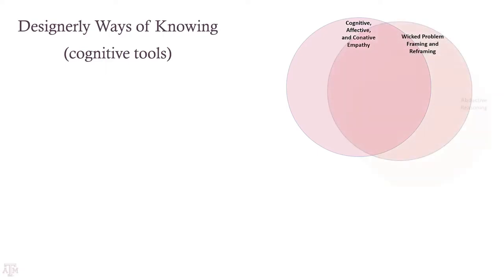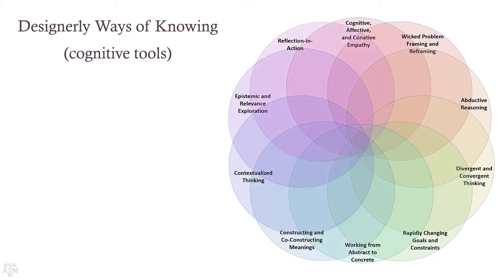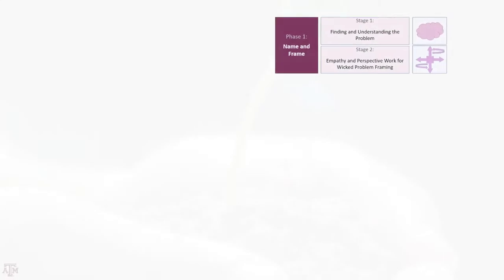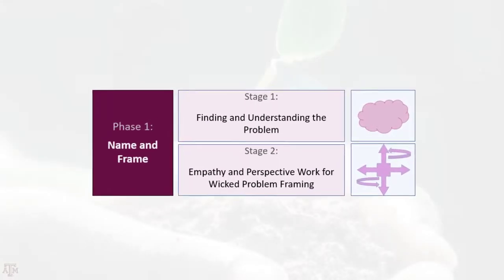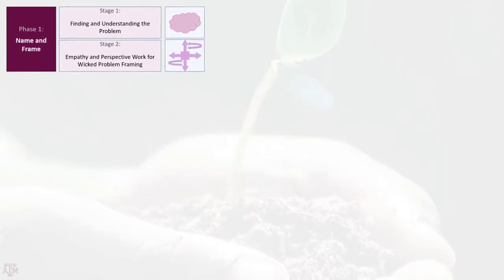These five phases are broken down into 10 steps. The designerly ways of knowing emphasized in the DTEL model are cognitive strategies used by expert designers, such as wicked problem framing, abductive reasoning, and reflection in action. The design thinking process typically starts by having students form groups and identify a real-world problem they could address.